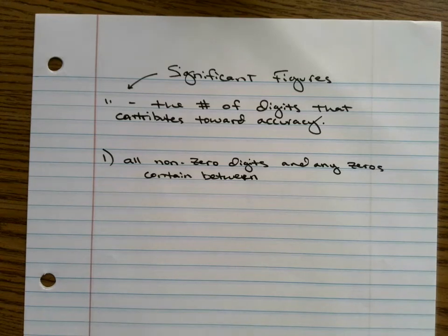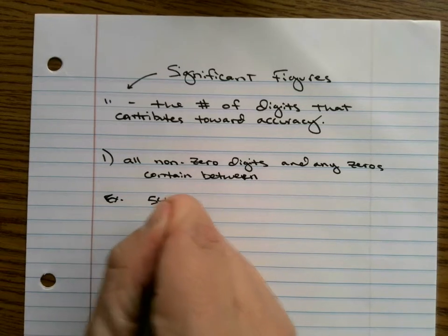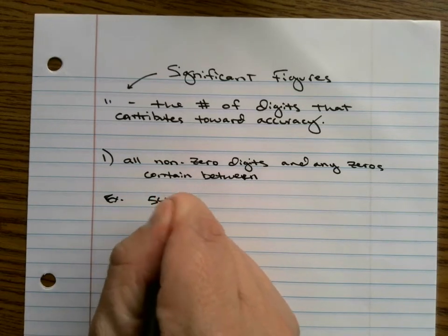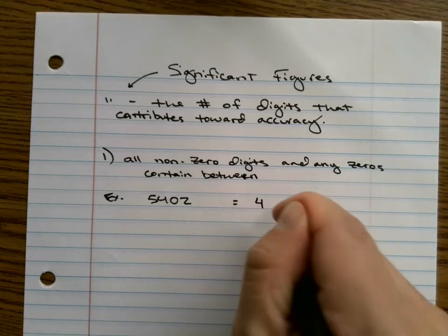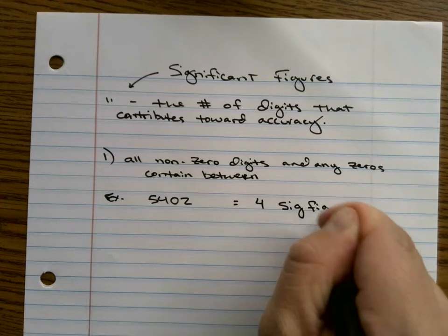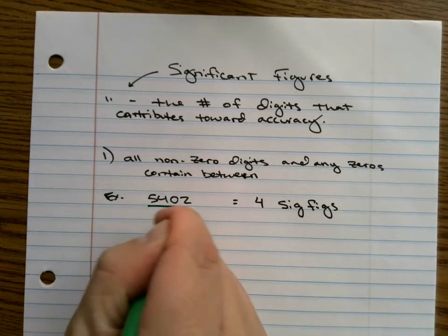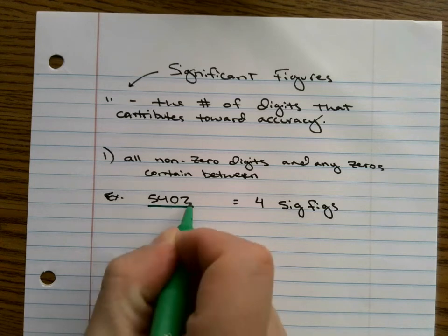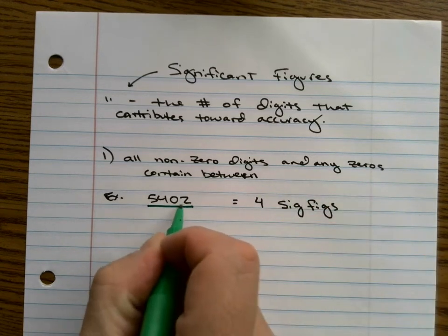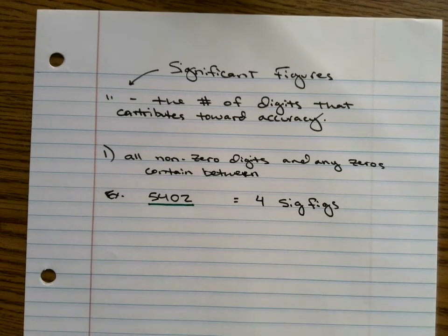So the first rule is all non-zero digits and any zeros contained between are considered significant. All non-zero digits and any zeros contained between. So, for example, we have the number 5,402. How many significant figures are in this number? I would say there's four sig figs. I'm going to call them sig figs for short and I'm going to underline the sig fig portion. Because all non-zero digits, so if it's anything but zero, it's going to be significant. So there's three of them. But we're also going to count the zeros in between them. So this one's locked in between two non-zeros. So that's considered to have four significant figures.